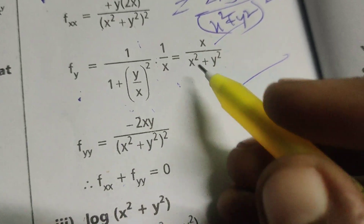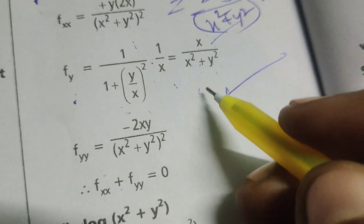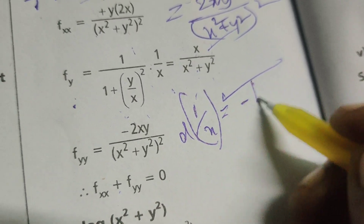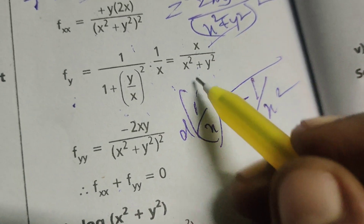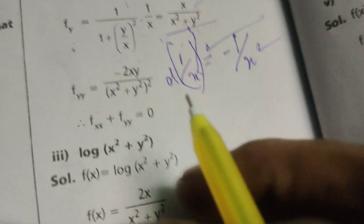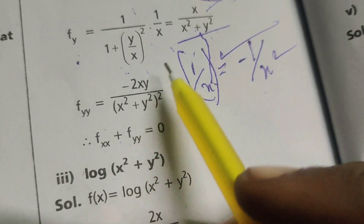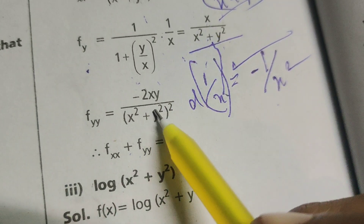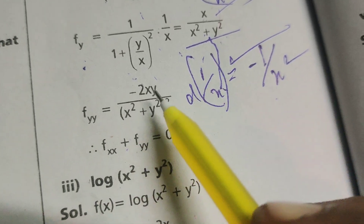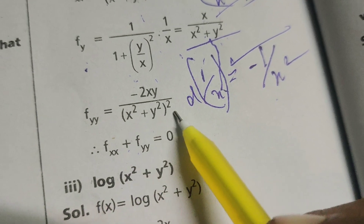Now fyy: again differentiating fy, which is x by x square plus y square, with respect to y. Using the formula, differentiation of 1 by x gives minus 1 by x square in place of x square plus y square. The x is already there, and differentiating y square gives 2y. Therefore fyy equals minus 2xy by x square plus y square whole square.